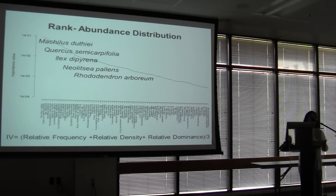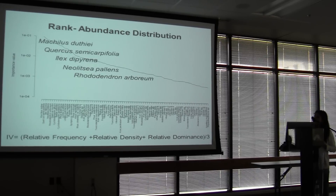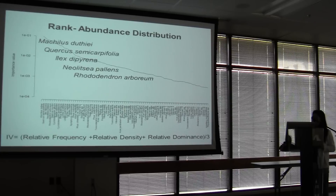These top five species are mostly used for fodder and fuelwood. Importantly, none of the species with the highest importance values appear in the five highest ranked plants considered most useful to people in that area — except for rhododendron.